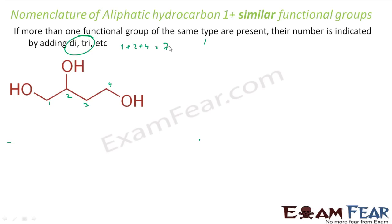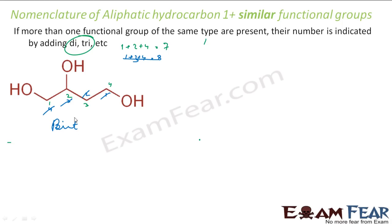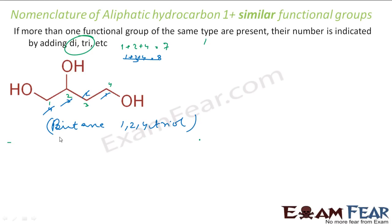Numbering in reverse: 1, 2, 3, 4 gives positions 1, 3, and 4 — sum = 1+3+4 = 8. So we will not take the reverse numbering; the green (forward) numbering gives the lower sum of 7 and is correct. So my name will be: no prefix, word root BUT (4 carbons), all single bonds so -AN, and positions 1, 2, 4 for three alcohol groups — 1,2,4-triol. The name is butane-1,2,4-triol.